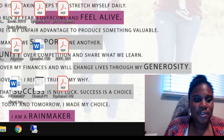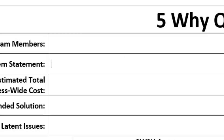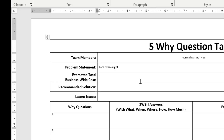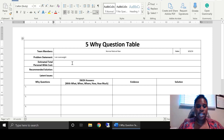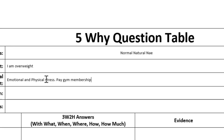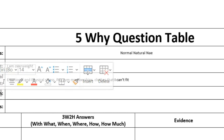Stay tuned to this video and you will see my screen. Okay, we're going to go into my 5-Why analysis. The problem statement is: I am overweight — just keep it simple. The estimated personal-wide costs of me being overweight include emotional and physical stress. I pay money to gym memberships over the years, and I buy clothes that I can't wear — so that's money sitting in my closet.